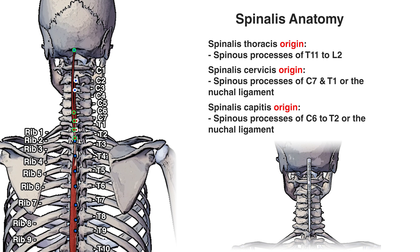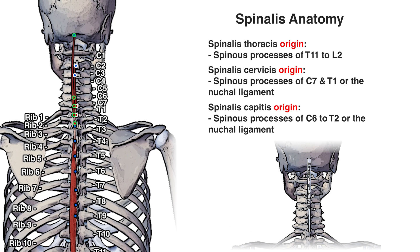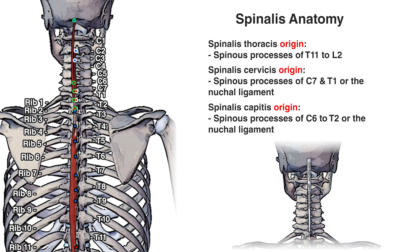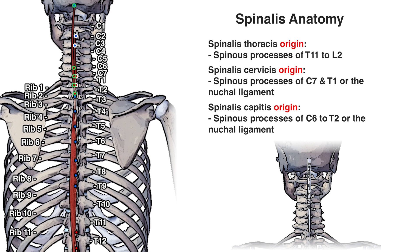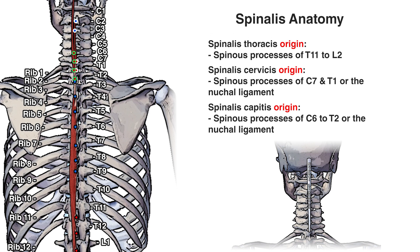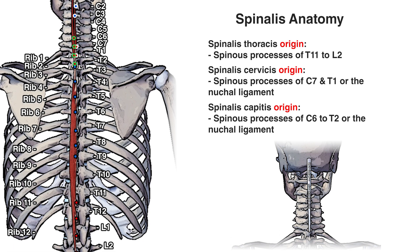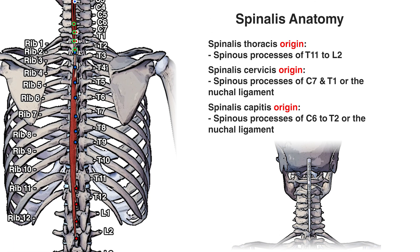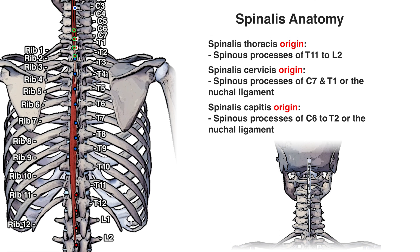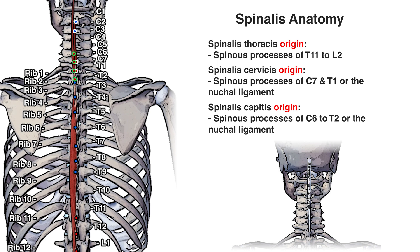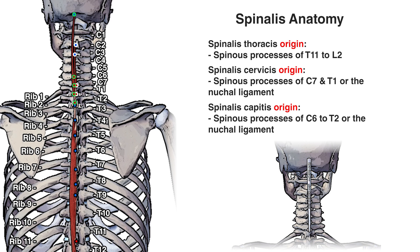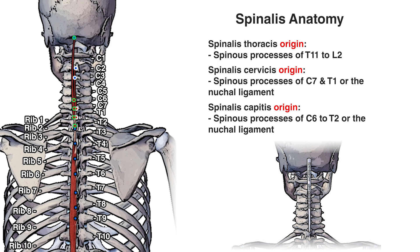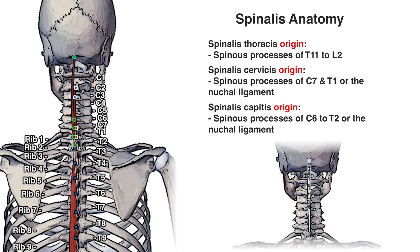Now let's look at the insertions. You can see the insertion points marked in blue. Much like the origins, the black outline is the thoracis section, the white outline is the cervicis section, and the green outline is the capitis section.